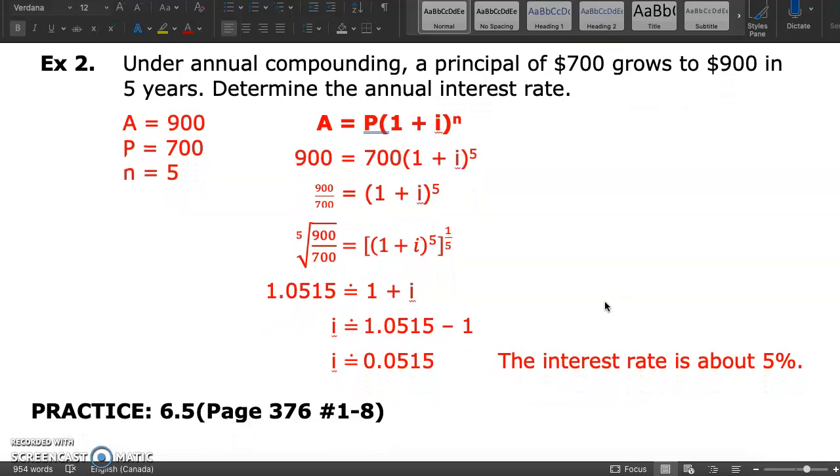Alright, example 2. Under annual compounding, a principal of $700 grows to $900 in 5 years. Remember that principal means the original amount invested. Determine the annual interest rate. So, if you can recall the compound interest formula. We have the amount that's after the money has been invested ends up being $900. That was given the principal or initial amount invested in a lump sum was $700. And it was compounded annually, so every year, for 5 years. So n is 5. If we substitute our given information into our formula. Remember, given what's unknown, the interest rate is unknown. Then we have our equation.